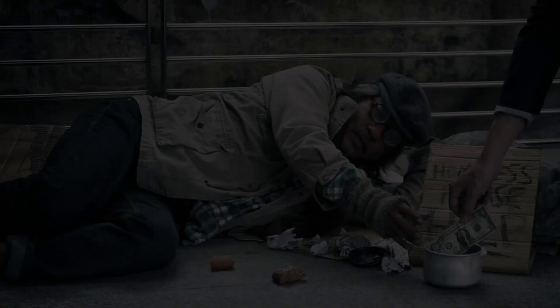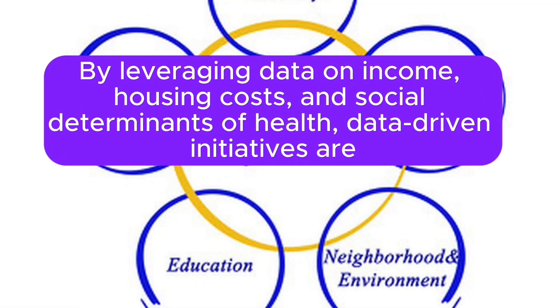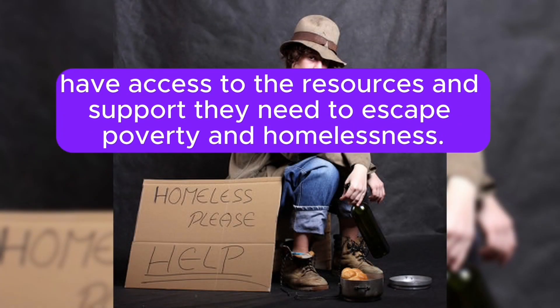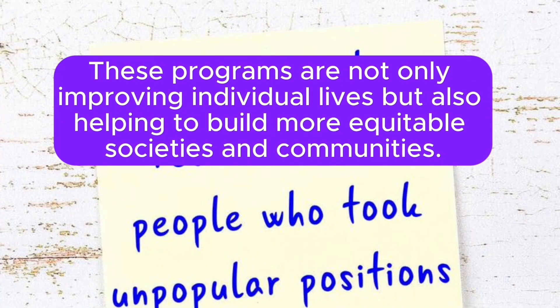Conclusion. Data science is at the forefront of addressing the complex issues of homelessness and poverty. By leveraging data on income, housing costs, and social determinants of health, data-driven initiatives are contributing to a more just and equitable world, where individuals have access to the resources and support they need to escape poverty and homelessness. These programs are not only improving individual lives, but also helping to build more equitable societies and communities.